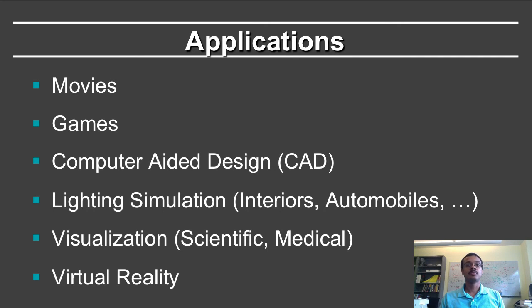Lighting simulation is one very important area in computer graphics and an aspect of realistic image synthesis. It is used to create realistic simulations of how interiors of buildings, interiors of rooms will look, or how an automobile will look in an outdoor lighting environment. Computer graphics is also used for scientific visualization as well as medical visualization — we have the Visible Human Project and many other projects where computer graphics is critical. And of course in virtual reality systems, where you combine the real with the virtual, including things like flight simulators.